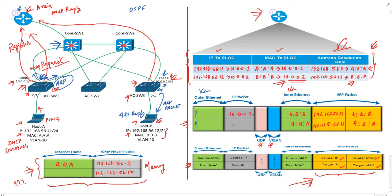This ARP reply packet is intercepted by switch 3, which knows that MAC A:A:A is reachable via switch 1, so it encapsulates the packet in a VXLAN header and forwards it directly to switch 1. Switch 1 receives the ARP reply and forwards it to host A. Host A can now complete its ping packet that was stored in memory, and further communication happens the same way — the ping packet is slapped with a VXLAN header and forwarded towards switch 3's loopback interface.